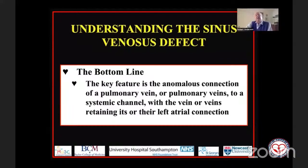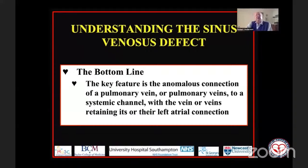What do we need to know to understand the sinus venosus defect? The key feature is anomalous connection of the pulmonary vein or veins. That anomalous connection is to a systemic venous channel, but an essential feature is that the pulmonary vein or veins retain their left atrial connection. This gives us a venous conduit that is outside the confines of the atrial septum — giving us a lesion that is not an atrial septal defect, but a lesion that permits inter-atrial shunting: sinus venosus defect, sinus venosus inter-atrial communication.